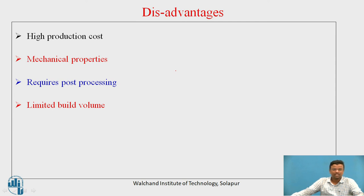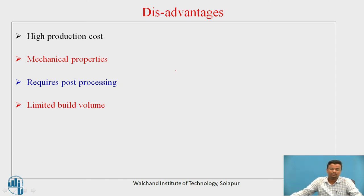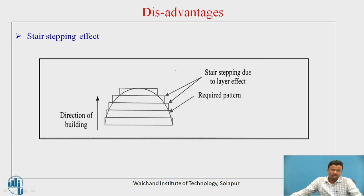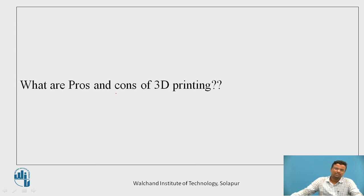Some disadvantages of additive manufacturing: the initial investment is very high. Sometimes the desired mechanical properties — such as strength, ductility, or deformation behavior — are not achieved. Post-processing is required, which takes additional time. The build size of the machine tool is a major limitation — for example, it may be limited to 350 × 350 × 350 mm. There is also always the stair-stepping effect during product development, where stepped surfaces are formed and must be removed through post-processing, which again requires additional time.